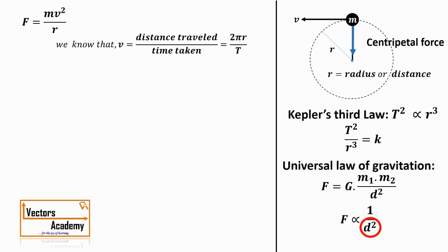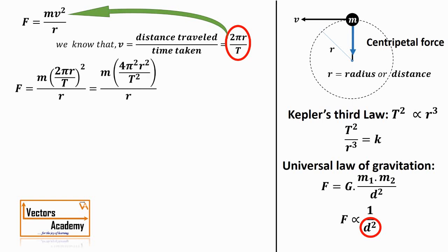Substituting this value of v in the above equation and squaring that term, we get F = 4mπ²r/T². If you look carefully at this equation and Kepler's third law, we already have T² but we don't have r³ in the numerator, we just have one r.